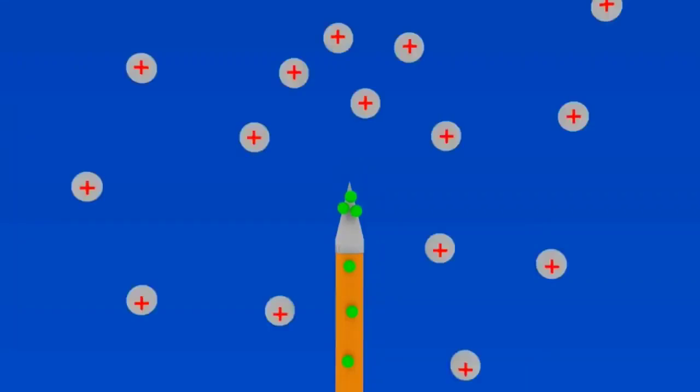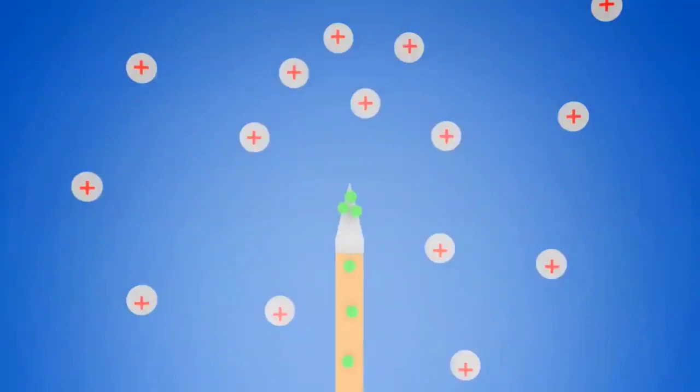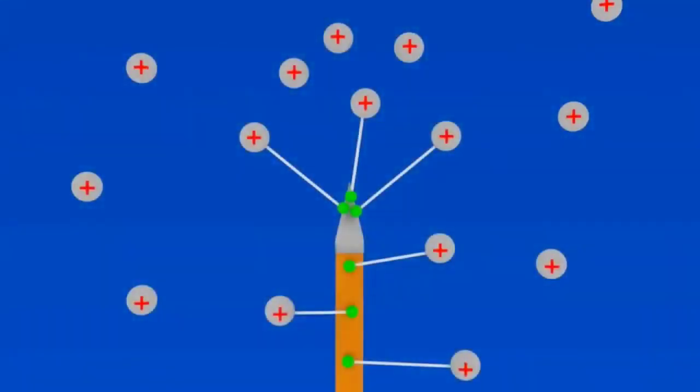Remember also that there are positively charged ions in the air. An electric field exists between the negative charges on the wire and the positive charges in the air. And we can represent that electric field by drawing lines between pairs of opposite charges. Notice that the electric field lines are closer together near the point, meaning the electric field is stronger there.